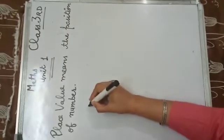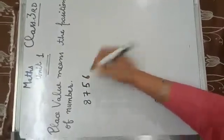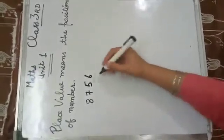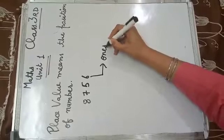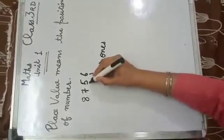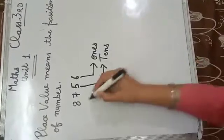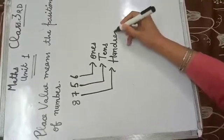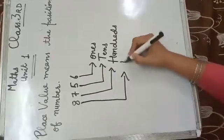For example, take the number 8756. We will write the place value of each digit. 6 is on the ones place. 5 is on the tens place. 7 is on the hundreds place. 8 is on the thousands place.